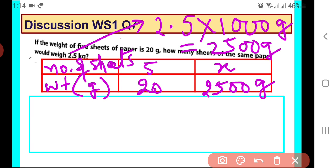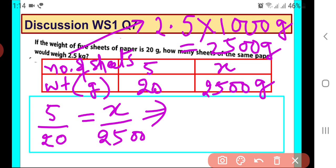Okay. Now you see this is a case of direct variation. So in case of a direct variation the ratio of the two quantities should be constant. So we will be using 5 upon 20 should be same as x upon 2500. So can you calculate x from here? What will be x?